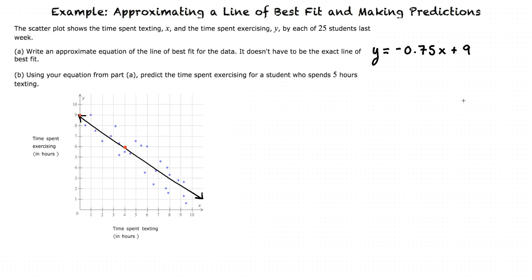Now, for part B, we are going to plug in the given information, five hours of texting, into the variable in our equation of the line of best fit that it is represented by. For this problem, that variable is x, which shows the time spent texting.